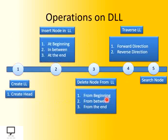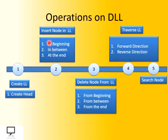Now, let's move to the operations on a doubly linked list. Mainly we can perform five different operations. The first one is to create a doubly linked list. Second one is to insert a node at three different positions — at the beginning, in between, and at the end of the list. The third operation is the delete operation, again at all three positions. Fourth one is to traverse the doubly linked list in both directions — forward and reverse — and we can also perform the search operation on a node.